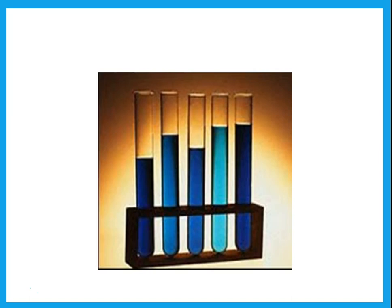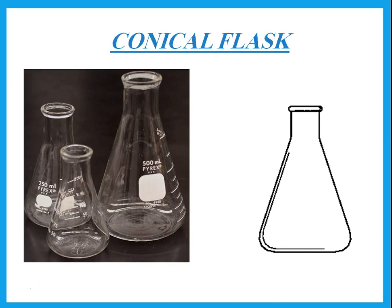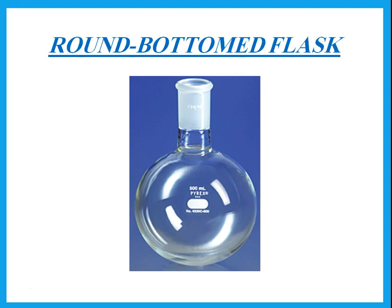This is a basic apparatus — do you know what the name is? These are test tubes. Test tubes are used for any chemical reaction that you want to do. What is the name of this? This is a conical flask — if you name it just 'flask' that's fine, but we usually call it a conical flask. What is this? This is a round-bottomed flask — you can also label it as a flask, but this is a round-bottomed flask and the other one was a conical flask.